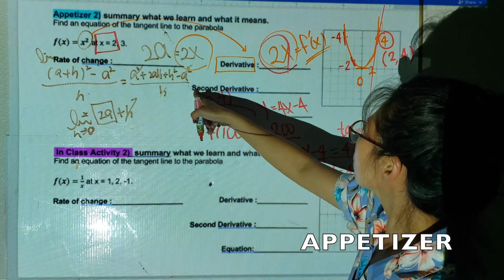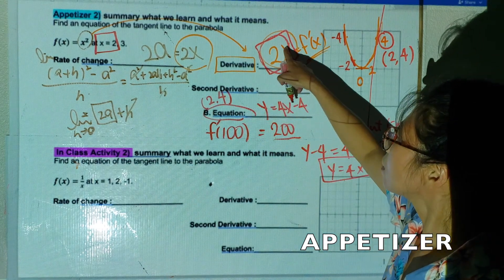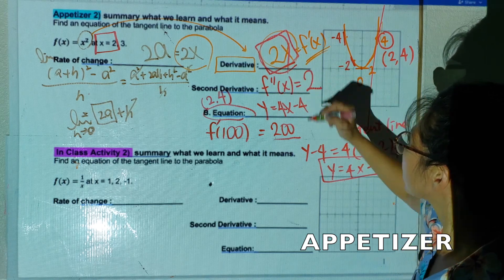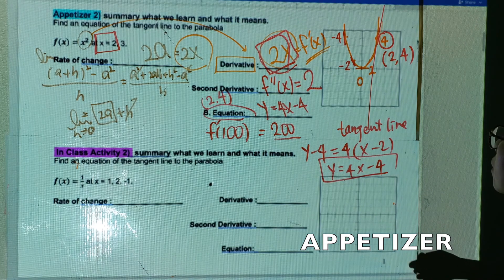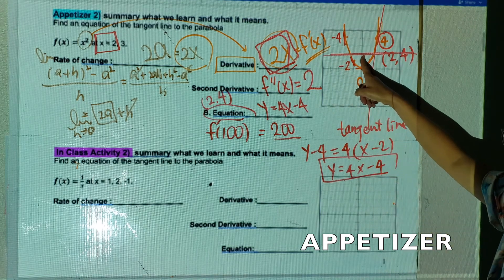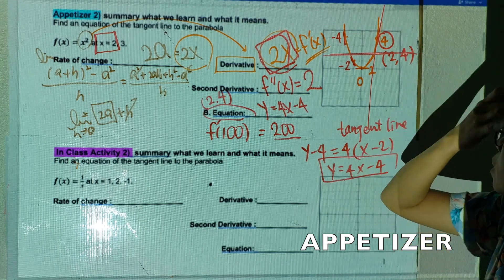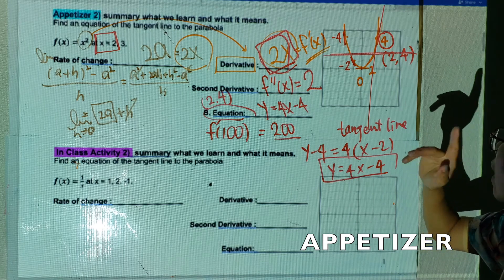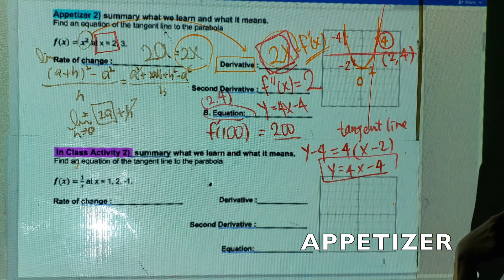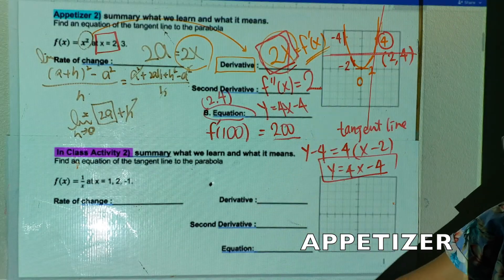The second derivative: I already have 2x, so taking the derivative one more time gives x to the zero power, which is just 2. My second derivative is 2. If I graph it, it's a constant positive value — that means I'm accelerating, always going forward. The concavity will always be up for x squared.